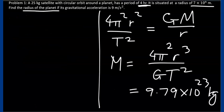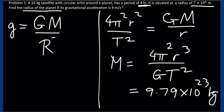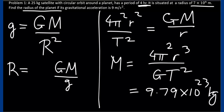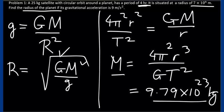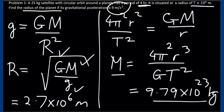To find the planet's radius, we use the relation from a previous video: gravitational acceleration equals G times the planet mass over the planet radius squared. Since we know the mass, the planet radius equals the square root of G times M over g. With G equal to 6.67 times 10 to the minus 11, the computed planet mass, and gravitational acceleration of 9 meters per second squared, we obtain a planet radius of 2.7 times 10 to the power 6 meters.